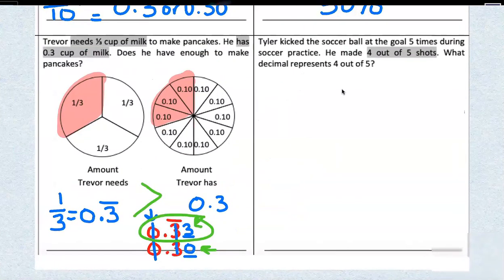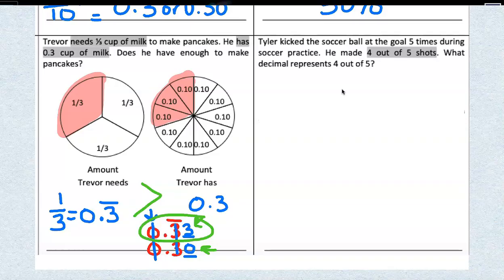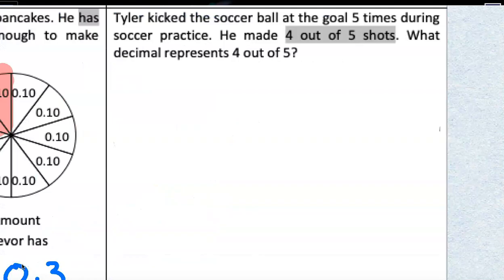So, does Trevor have enough milk to make pancakes? No, he doesn't. Let's try this last one together. Tyler kicked the soccer ball at the goal five times during soccer practice. He made four out of five shots. What decimal represents four out of five?